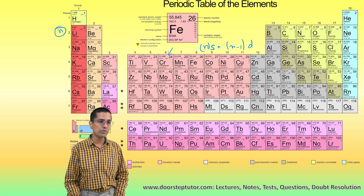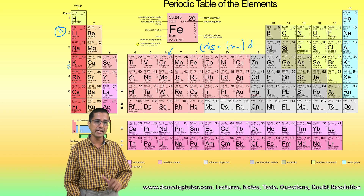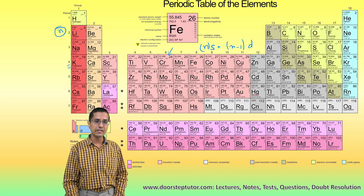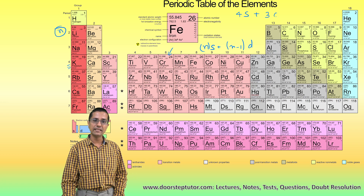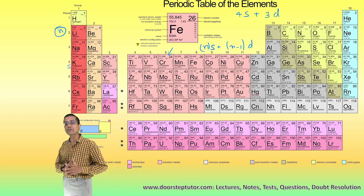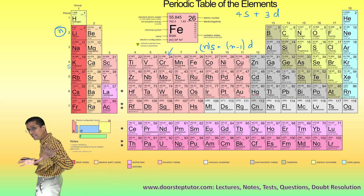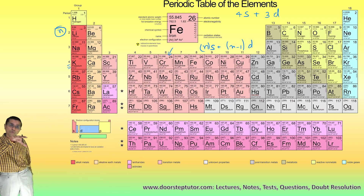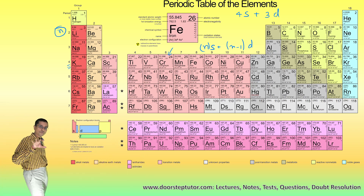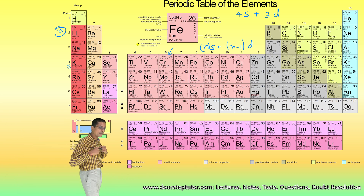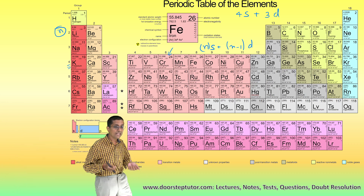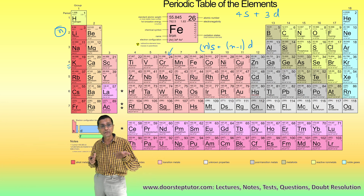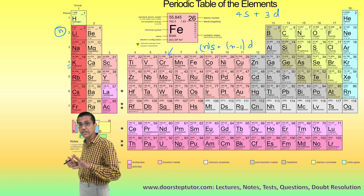For example, looking at the fourth period where N equals 4, we have to consider both the 4S electrons as well as the 3D electrons. Both of those — 4S as well as 3D — can possibly contribute to bonding and can be valence electrons in the case of D-block elements.